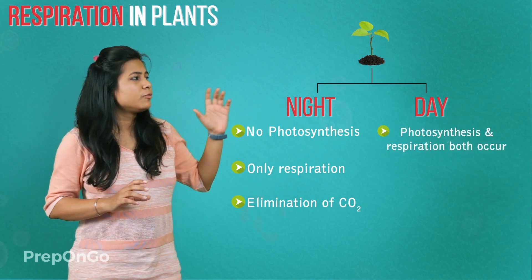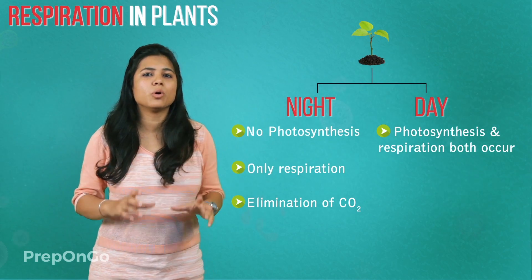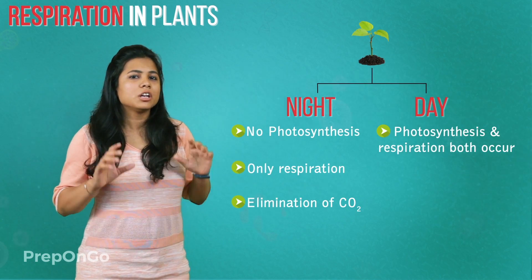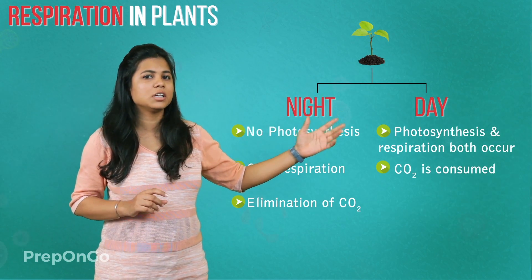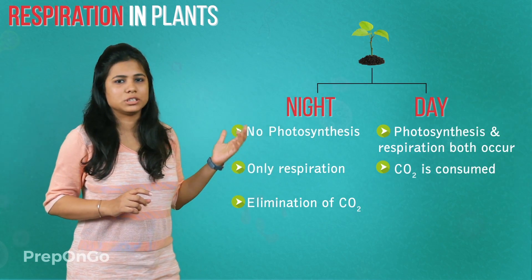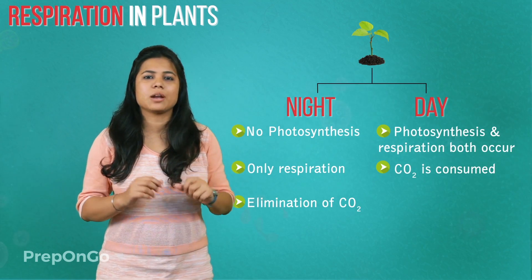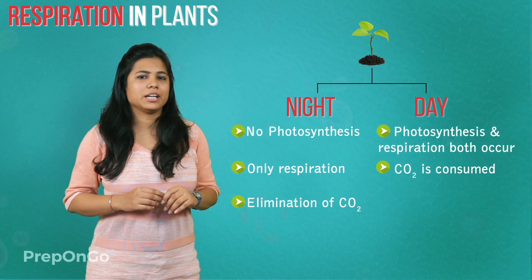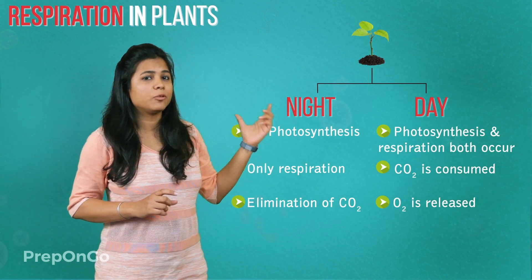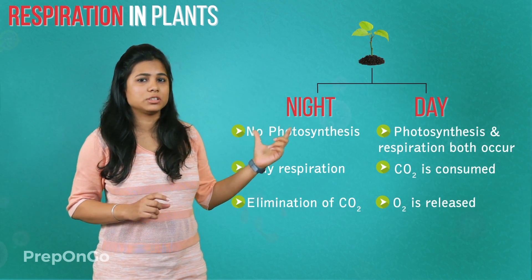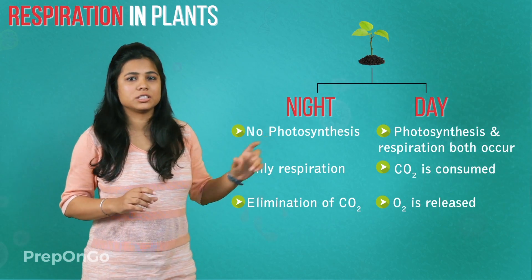At day, the photosynthesis and respiration process both occur simultaneously. The carbon dioxide which is released during the respiration process is utilized in the photosynthesis process, so there is no release of carbon dioxide at daytime. Instead, oxygen is released in the photosynthesis process as a by-product, which is released by the plant as an excess product.